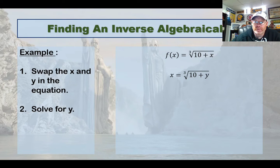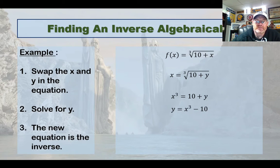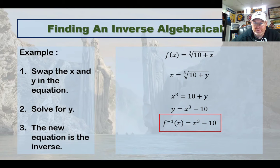Okay, so the first thing we have to do is cube both sides. And then I would subtract 10. And what you are left with is the equation of the inverse. X cube minus 10. That's it. It's pretty simple to find those inverses.